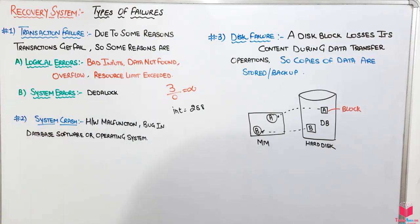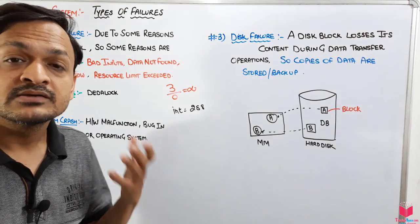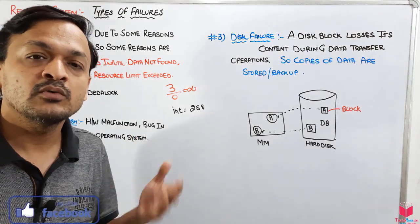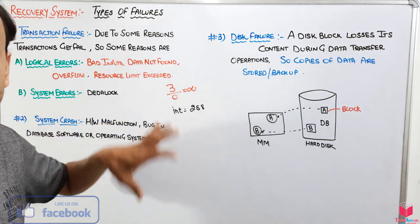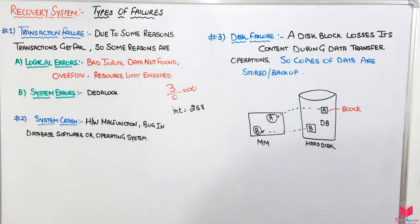Then we have resource limit. Resource limit excess - suppose transaction is demanding for more resources but its limit is exceeded, so it will stop working there. That means there are logical errors due to some coding.